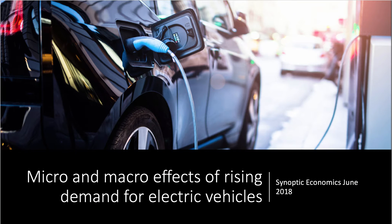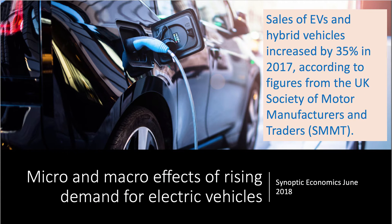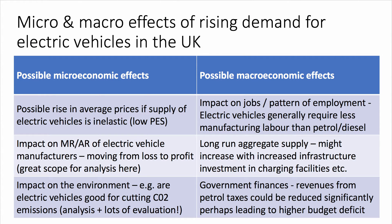This is the first of two synoptic short videos looking at the economics of the electric vehicle industry. We're going to focus on the micro and macro effects of increasing demand for electric vehicles. Sales of electric vehicles and hybrid vehicles increased by over a third in 2017, according to the latest data from the UK Society of Motor Manufacturers and Traders. There's clearly been a big, fast increase in market demand for these types of vehicles, making this a potentially great synoptic exam question. Let's look at three micro effects and three macro effects of rising demand for electric vehicles in the UK.